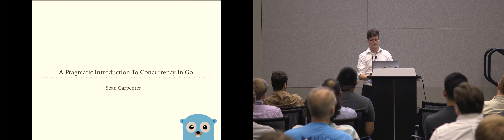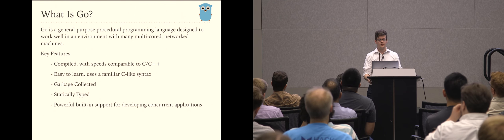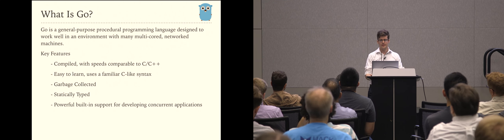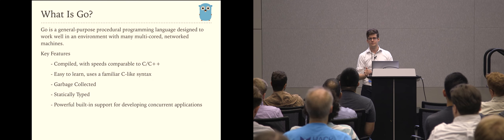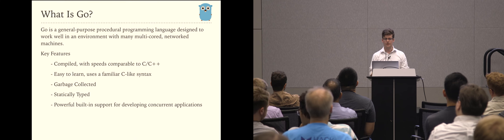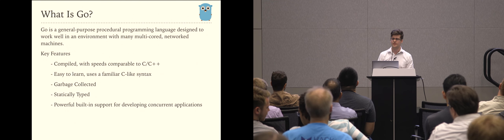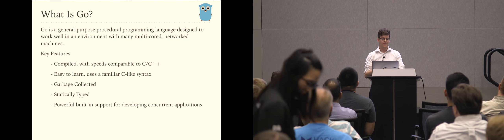So first and foremost, what's Go? Go is a general purpose procedural programming language designed to work well in an environment with many multi-core networked machines. It was developed at Google about 10 years or so ago by some extremely talented individuals, such as Ken Thompson and Rob Pike.